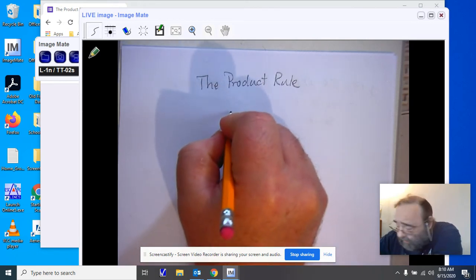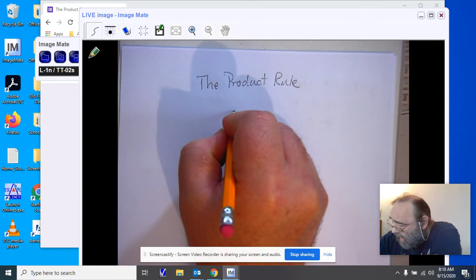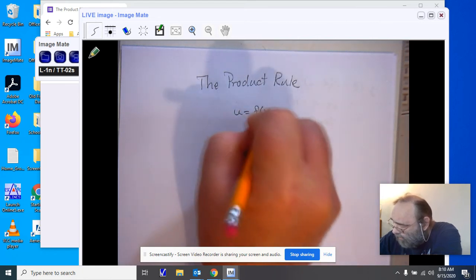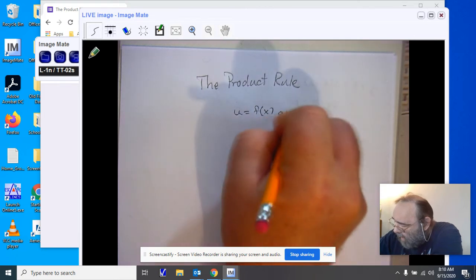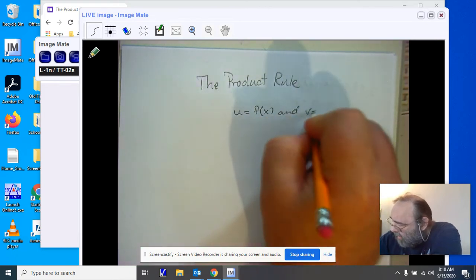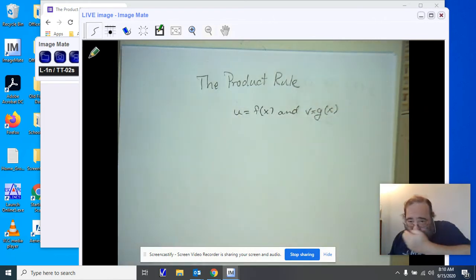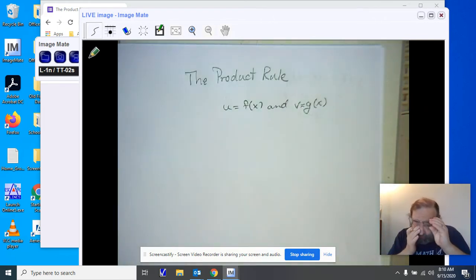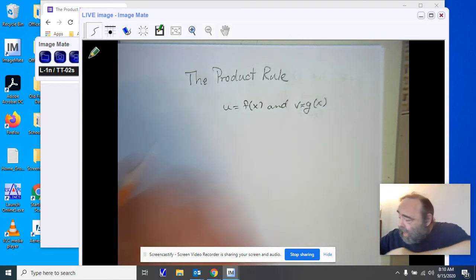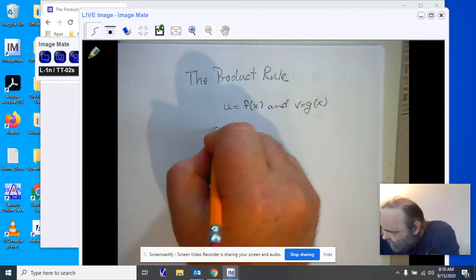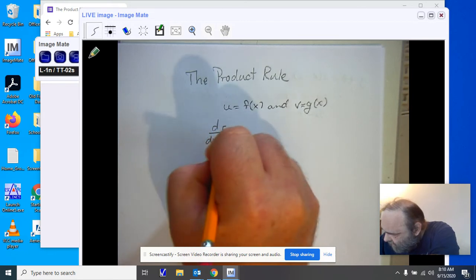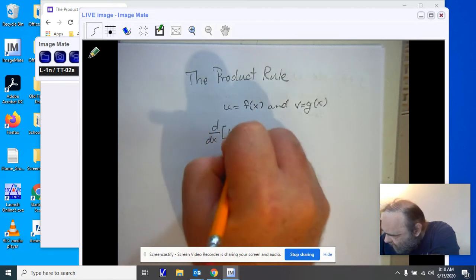So if I have two functions, let's let u equal f of x, and we're going to let v equal g of x. This will bring up our notation for today, working with a prime, and I'd just like you to look at it as d dx of u times v.